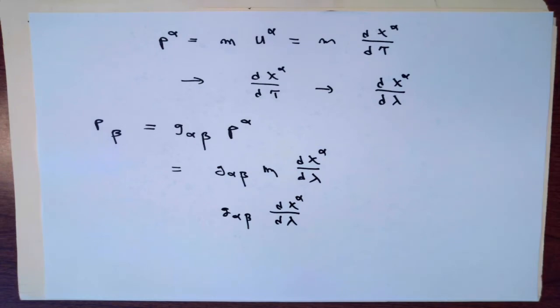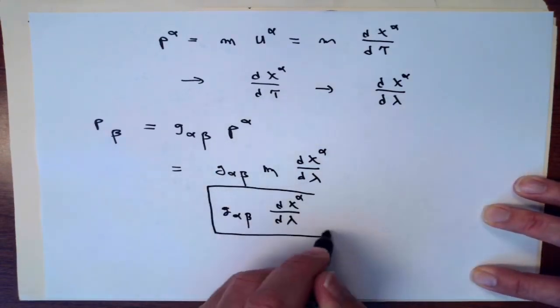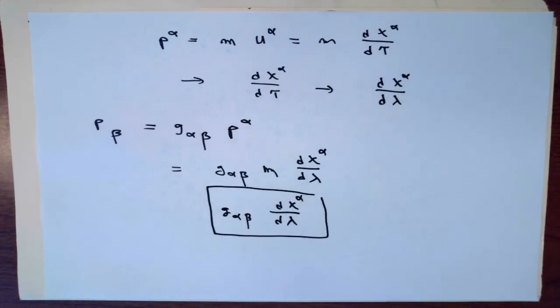for a particle with non-zero mass, this would be the one-form version component number beta of the 4-momentum, or if I'm talking about a particle that has mass zero, this is a one-form component version of the tangent vector. I can't really call it the 4-momentum or 4-velocity in this case, because of the whole p dot p being zero thing for a photon.